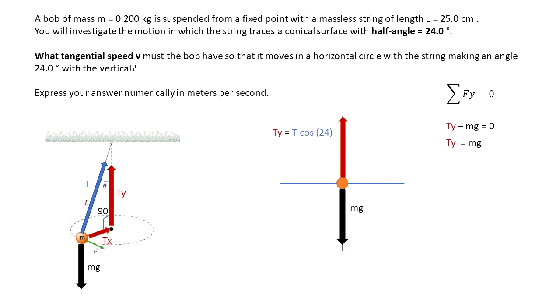We have that the magnitude of the tension multiplied by the cosine of 24 is equal to 0.2 times 9.8. That's mg. If we do some arithmetic, we get that the tension is equal to 2.145 newtons. That's the magnitude of the tension along the string.